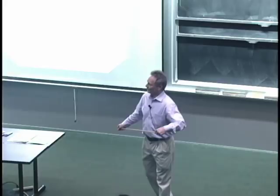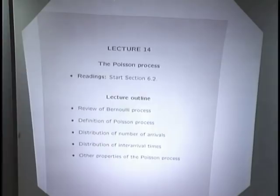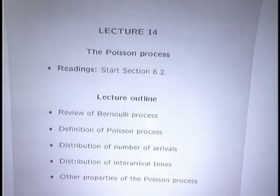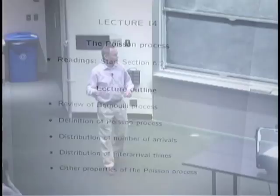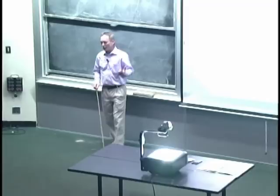Last time we started talking about random processes — a random experiment that evolves over time. It's a single probabilistic experiment with an infinite number of stages. We discussed the simplest random process, the Bernoulli process, which is an infinite sequence of Bernoulli trials like flipping a coin over and over. Now we want to move into a continuous-time version: the Poisson process.